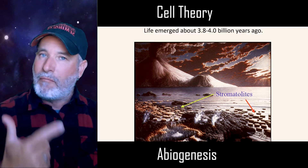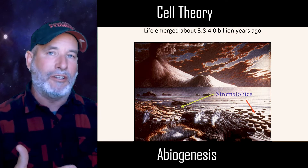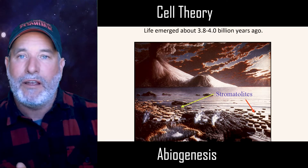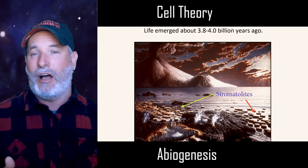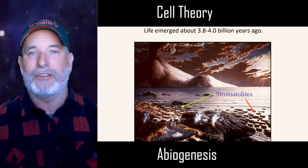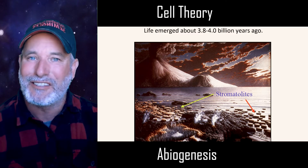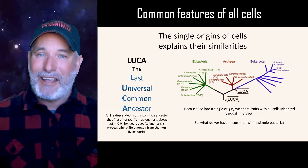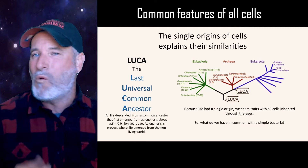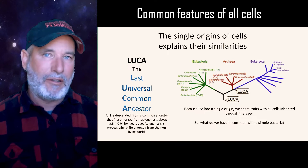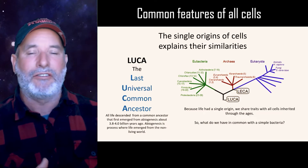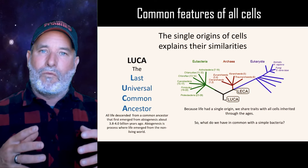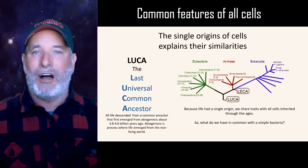Abiogenesis: 'a' means without, 'bio' means life, and 'genesis' means origin — so abiogenesis means the origins of life from non-living material. We have good evidence that life got started at least 3.8 billion years ago. We have the fossil remains of stromatolites, which are bacterial colonies. Interestingly, all life on this planet came from a single common ancestor — not one cell or one organism, but a population of cells that arose probably in some hydrothermal vent in an ancient ocean about 4 billion years ago. We call it LUCA, the last universal common ancestor.